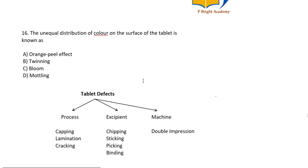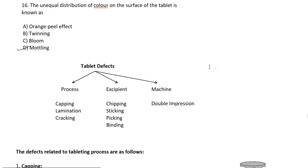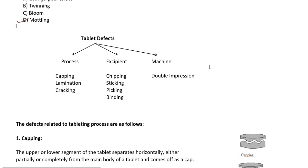Tablet defects are an important topic. We will discuss different tablet defects. The first class is process related, excipient related, and machine related. Process related defects are capping, lamination, and cracking. Excipient related are chipping, sticking, picking, and binding. Machine related is double impression.